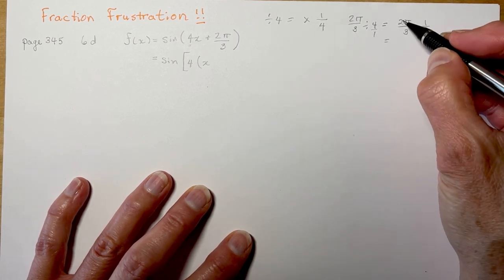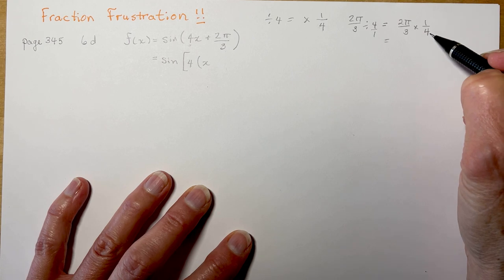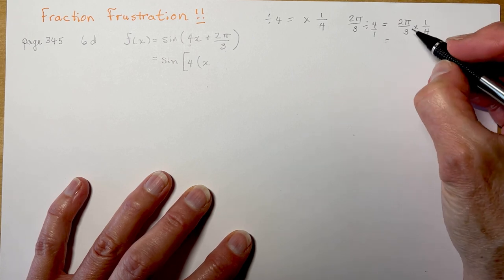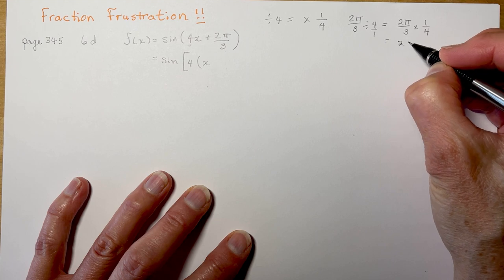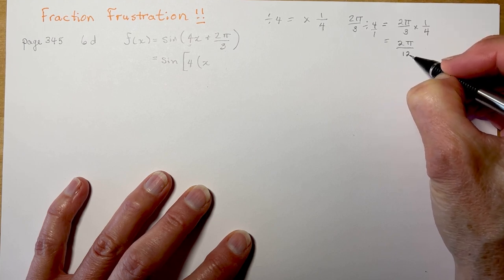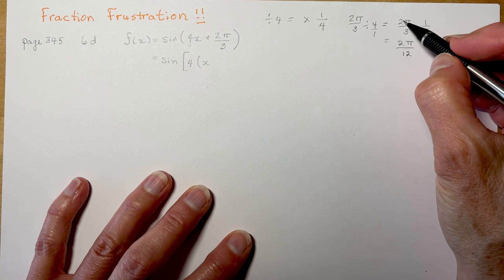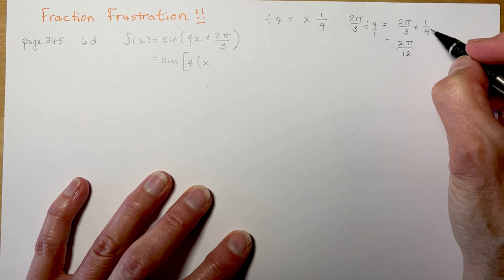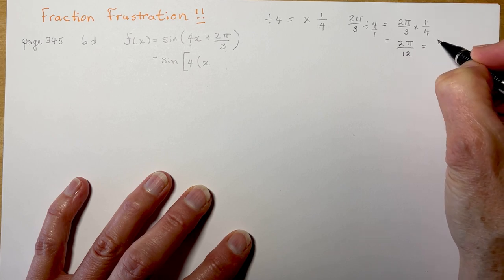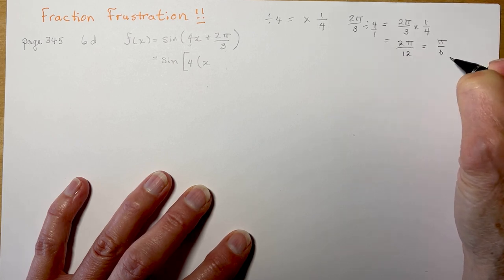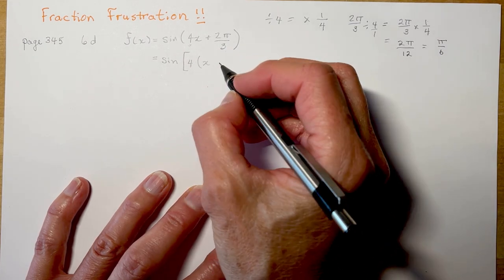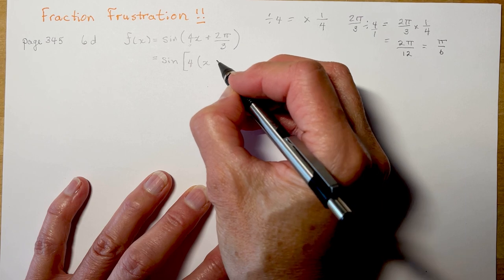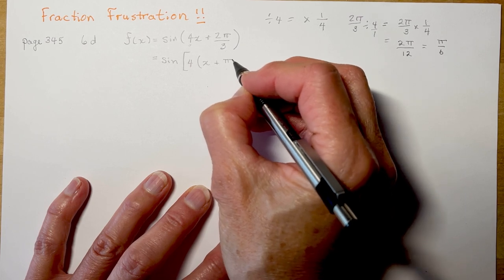Some of you may see quickly that you can divide the 2 into the 4 to get 2, then multiply by 3 to get 6. If not, don't worry — write it out as 2π/12. When multiplying fractions, multiply the tops together and multiply the bottoms together. Then reduce: 2π/12 simplifies to π/6. So 2π/3 divided by 4 gives us π/6.